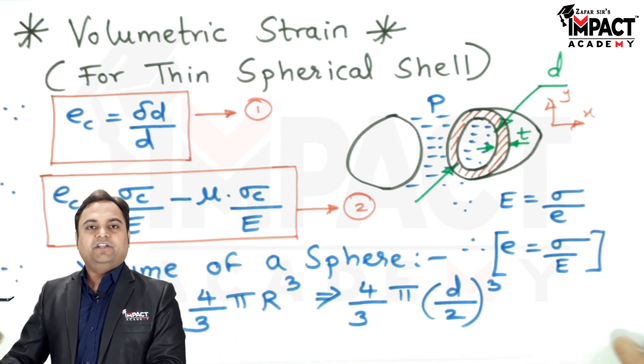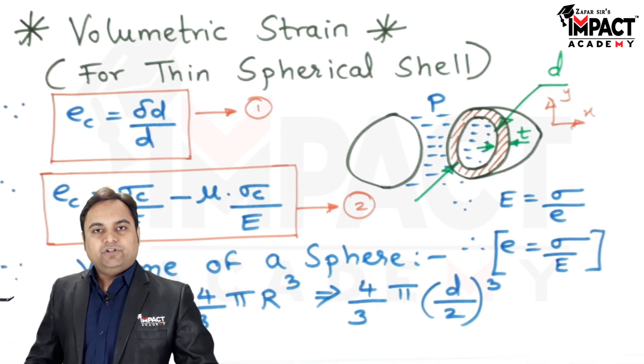So, in short, that was an explanation regarding volumetric strain for a thin spherical shell.